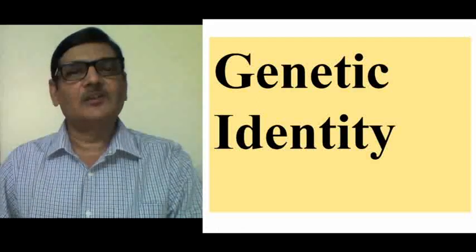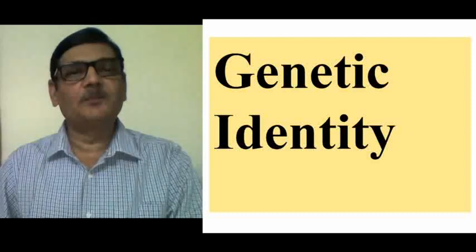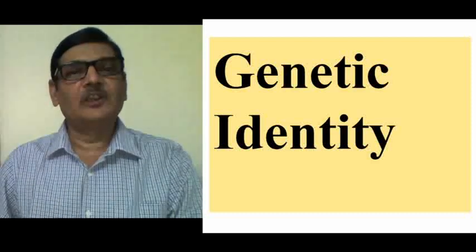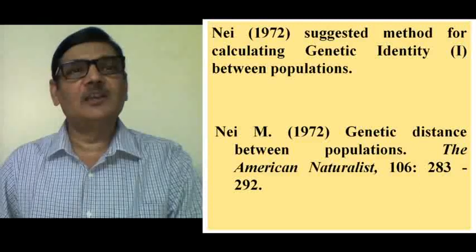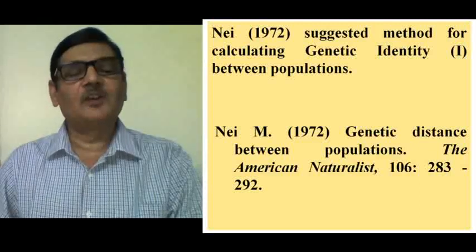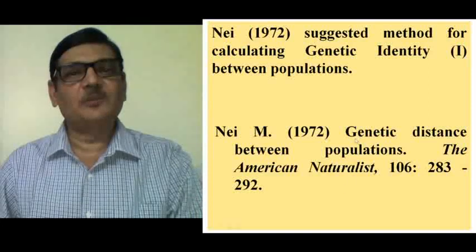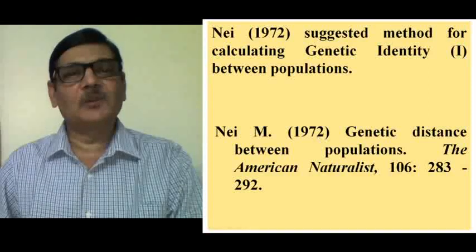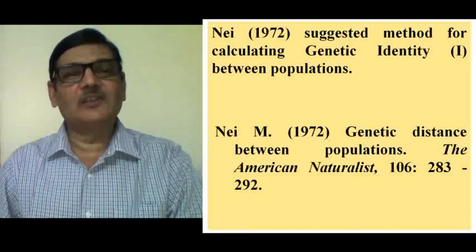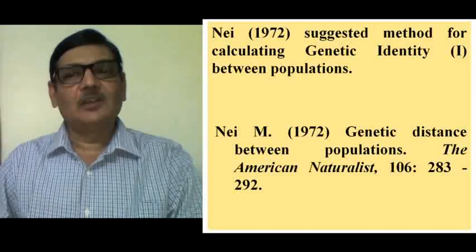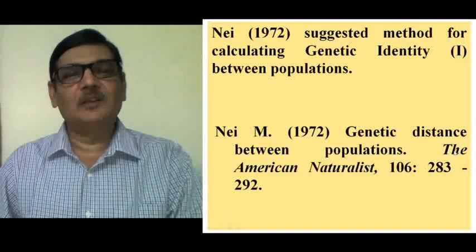Genetic identity is an aspect in the field of population genetics that helps us to know the level of genetic similarity between two populations. It was Nei who in 1972 suggested the method for calculating genetic identity between populations. The paper in which he explained this aspect was published in 1972, and the title was 'Genetic Distance Between Populations.' We can also calculate genetic distance after calculating genetic identity. This paper appeared in the journal The American Naturalist, 106th volume.